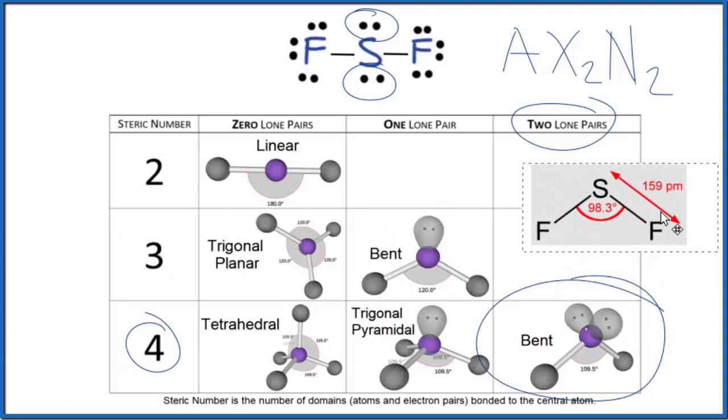Note again, the bond angles for this molecule, it won't be the ideal 109.5. We're looking more at this 98.3. And that's due to the electronegativity of the fluorine atoms.